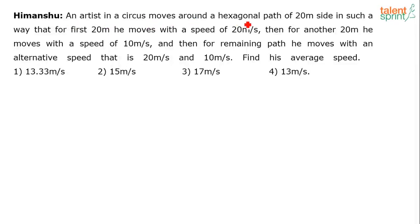An artist in a circus moves around a hexagonal path of 20 meter side in such a way that for the first 20 meters he moves with a speed of 20 meters per second, then for another 20 meters he moves with a speed of 10 meters per second, and then for the remaining path he moves with an alternative speed that is 20 meters per second and 10 meters per second. Find his average speed.